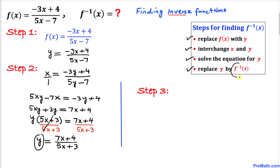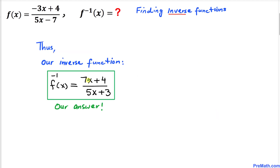Our final step is to replace y with f inverse of x. Therefore, f inverse of x equals 7x plus 4 divided by 5x plus 3. That is our inverse function. Thanks for watching and please don't forget to subscribe to my channel for more exciting videos!